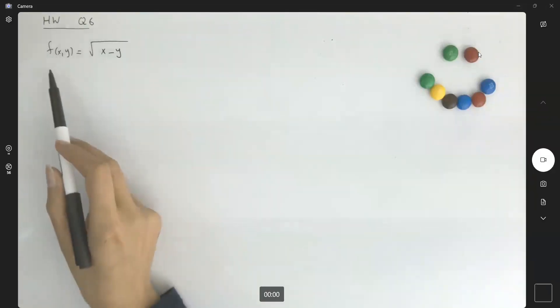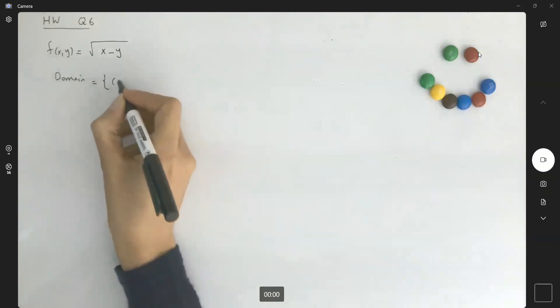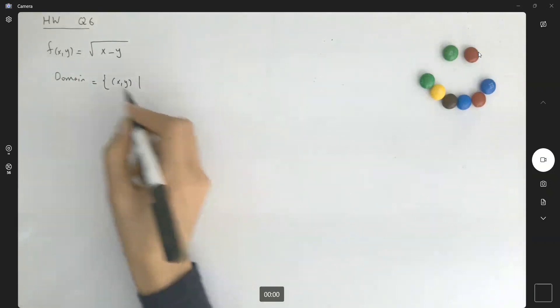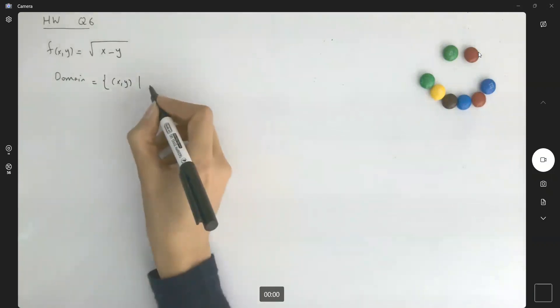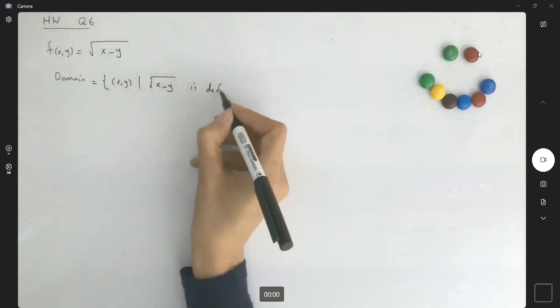Question 6. Suppose you have a two-variable function. The domain of the function is the set of all points x and y such that this is defined. Square root of x minus y is defined.